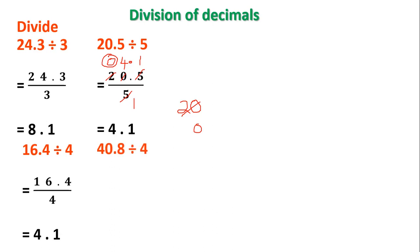Let's take the next problem: divide 40.8 by 4. Write the dividend in the numerator and the divisor in the denominator. Start dividing the numerator by the denominator from the highest place to the lowest place. The highest place is tens; 4 is there. 4 ones are 4; 4 minus 4, remainder is 0. The next digit is 0; 4 zeros are 0, so the remainder stays 0.